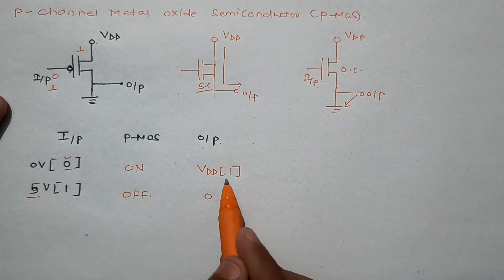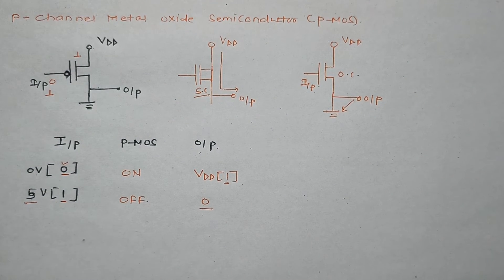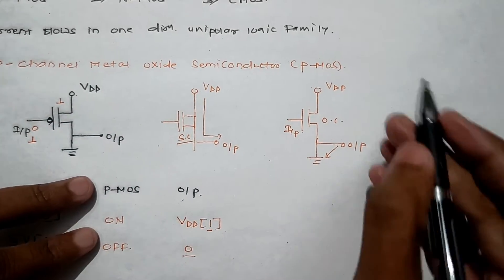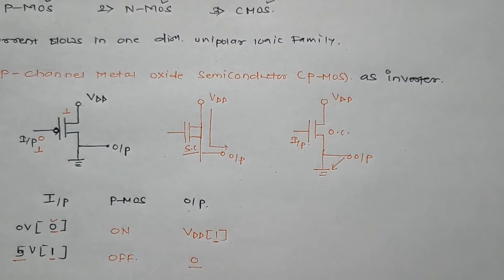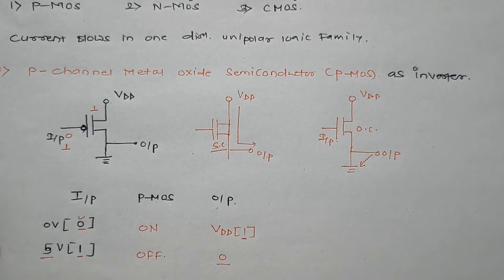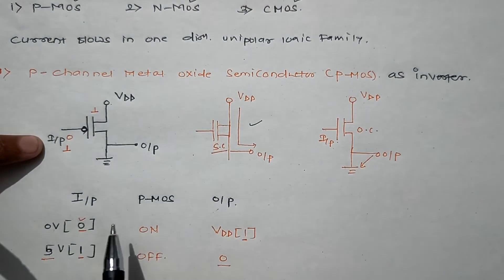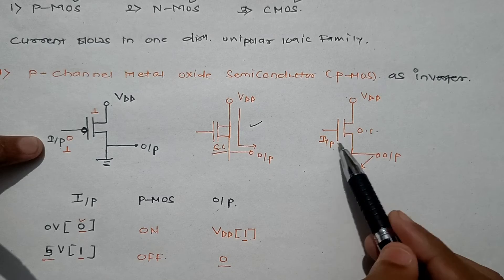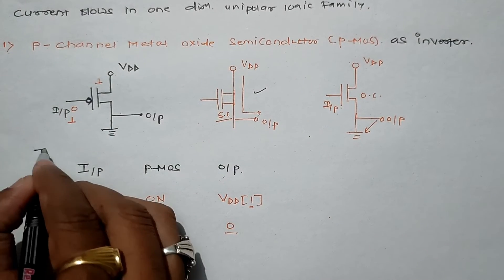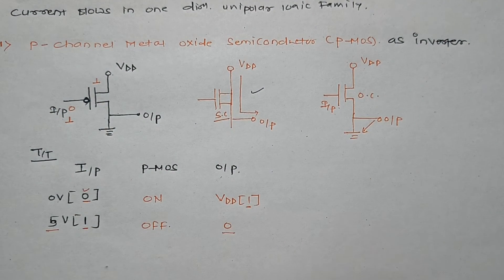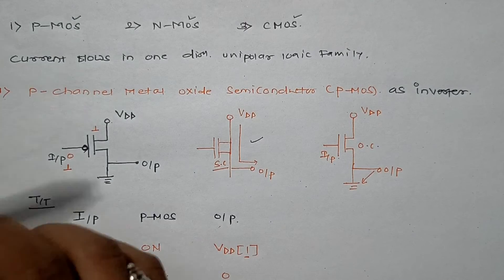So when we apply input 0 we get output 1, and when we apply input 1 we get output 0. This means it is working as a complementary — that is why this schematic is also called PMOS as an inverter. When input is 0, it is short-circuited, output connects to VDD giving logic 1; when input is 1, it is open circuit, output connects to ground giving logic 0.